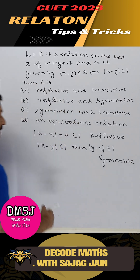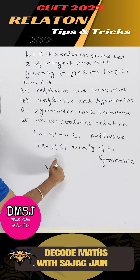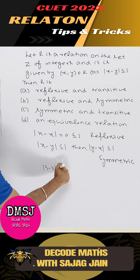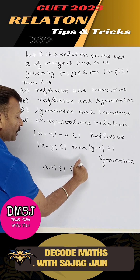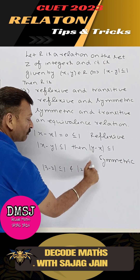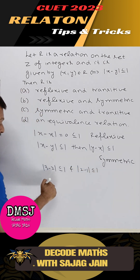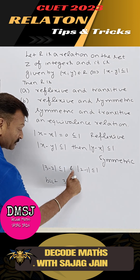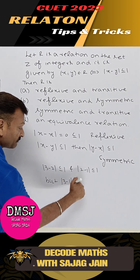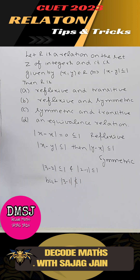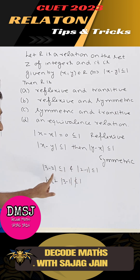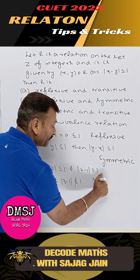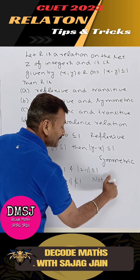Now let's check if it is transitive. If we take |3 - 2| = 1, this is ≤ 1, and |2 - 1| is also ≤ 1. But |3 - 1| = 2, which is not ≤ 1. So 3 is related to 2, and 2 is related to 1, but 3 is not related to 1. So this means it is not transitive.